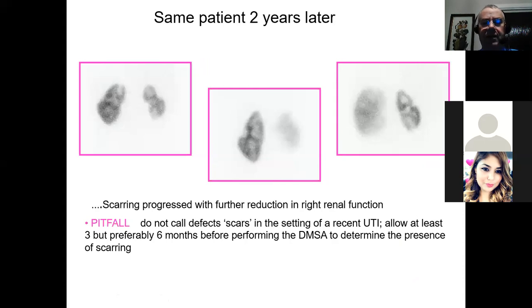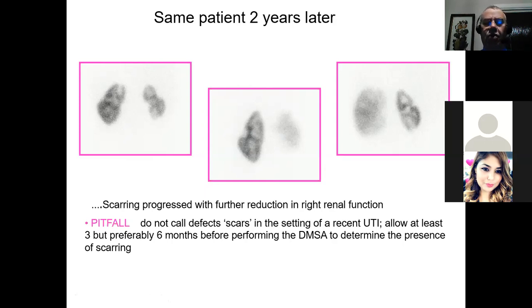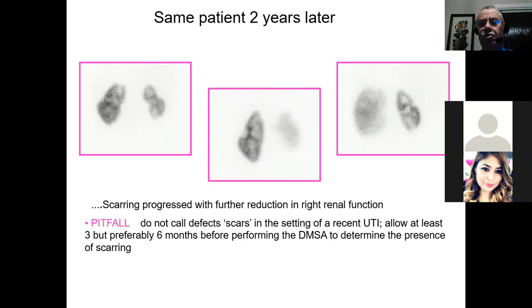The same patient scanned two years later shows the right kidney has shrunk even further and now looks very abnormal; unfortunately the kidney that was normal now has a scar as well. It's important to report that appearance as a positive or concerning scan. Be careful with your language: if you see a defect but can't get a six-month clear period — say, this is two months after the last urinary infection — don't call it a scar, just call it a defect. Recommend re-scanning in a year's time to see if it becomes a scar; it's quite acceptable to use the word defect instead of scar.